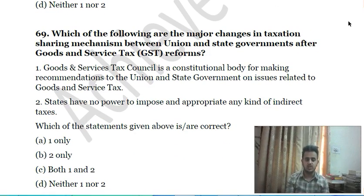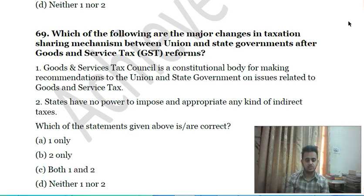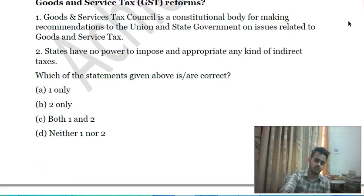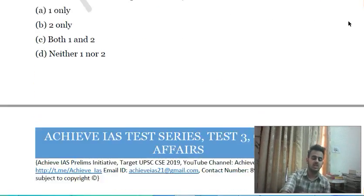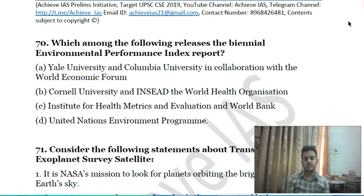Sixty-eighth question: which of the following are major changes in the taxation and revenue-sharing mechanism between union and state governments after the Goods and Services Tax reforms? First, the GST Council is a constitutional body for making recommendations to the union and state governments on issues related to GST; second, states have no power to impose and appropriate any kind of indirect taxes. Choose the correct answer.